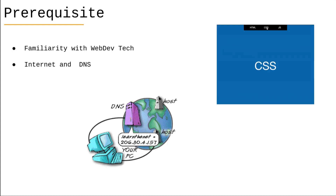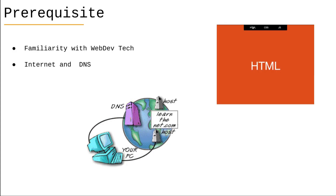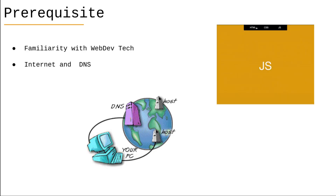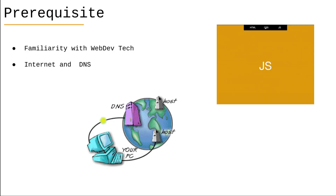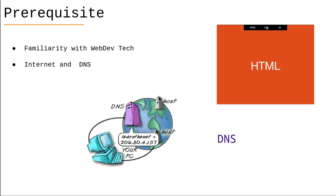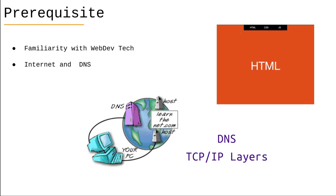If you are continuing this series, make sure you have some familiarity with web app technology such as HTML, CSS, and JavaScript, and a basic idea about how the internet works in general — like how URLs are mapped to domain names and resolved to IP addresses, and what the different layers of the TCP/IP model are and what they do.